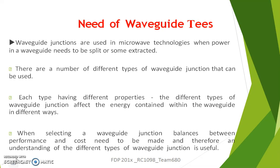Why are waveguides needed? Waveguide junctions are used in microwave technologies when power in a waveguide needs to be split or some extracted. There are a number of different types of waveguide junctions, and each has different properties. The energy contained within different types of waveguides is different. Hence, when selecting a waveguide junction, a balance between performance and cost needs to be achieved, making a better understanding of different types of waveguides very essential.